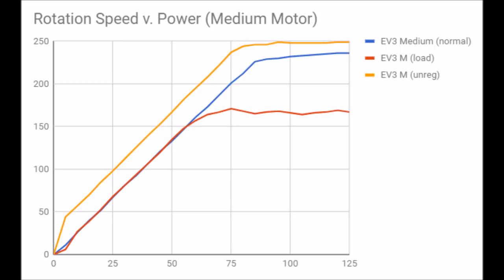However, the maximum speed it reaches is actually higher than the maximum speed of the normal motor, which is interesting because in the last test with the large motor we saw that the unregulated and normal motors had the same maximum speed, but here with the medium motor, the unregulated motor is actually faster.